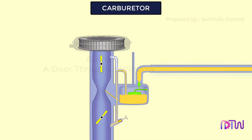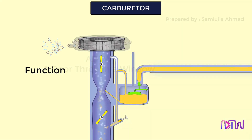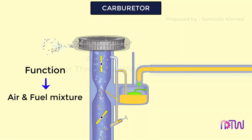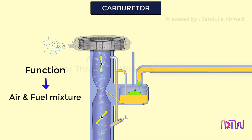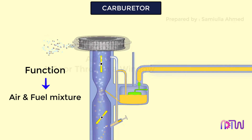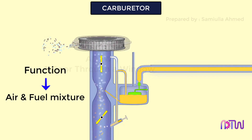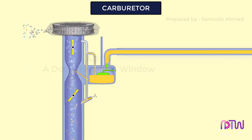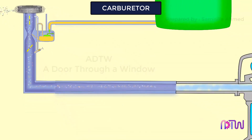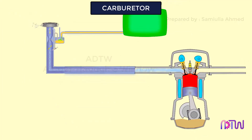In this video I will be explaining about the carburetor. The function of the carburetor is to produce a combustible air-fuel mixture by mixing the proper amount of fuel with air as per the engine load requirement before supplying the charge to the engine cylinder.